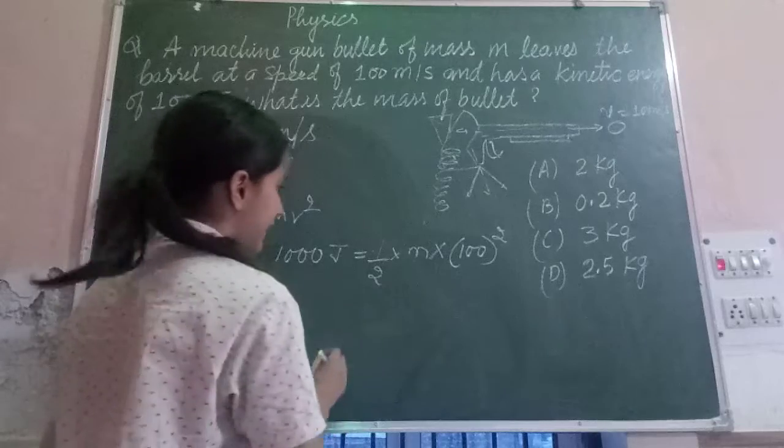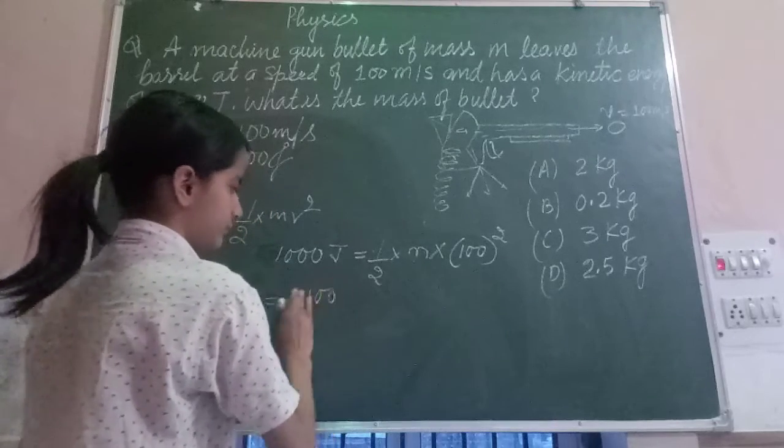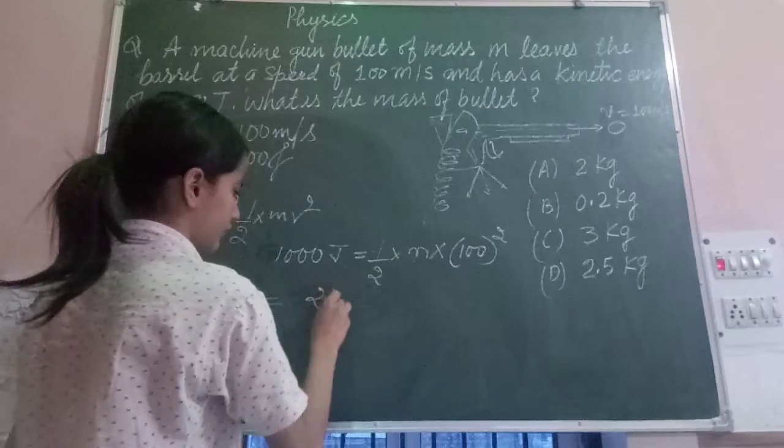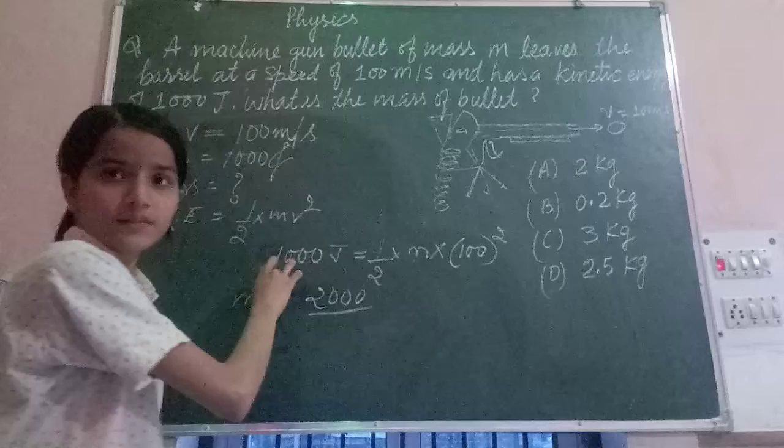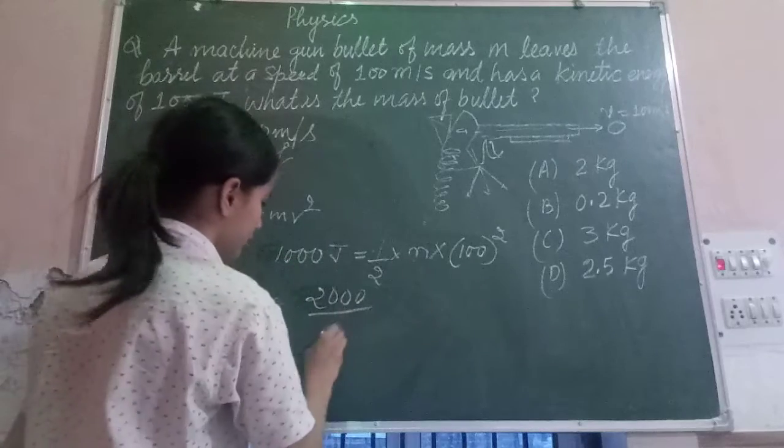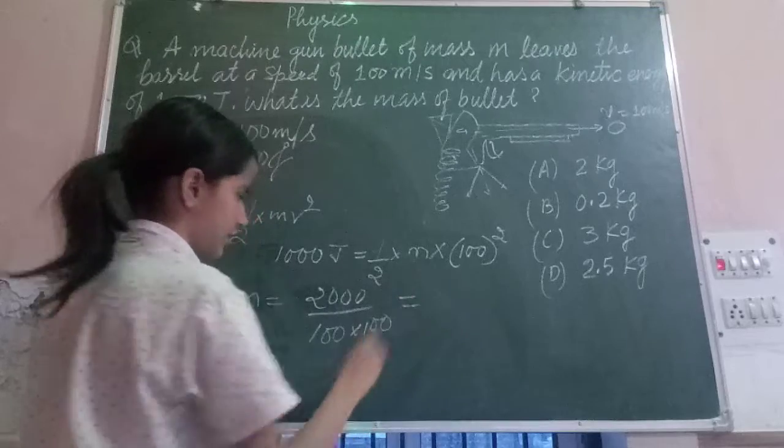After that, we will cross multiply, so we will get that m is equal to 2 into 1000, which equals 2000, upon 100 into 100.